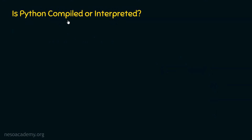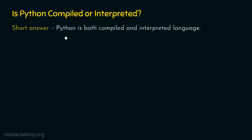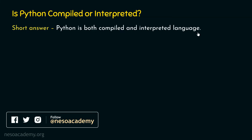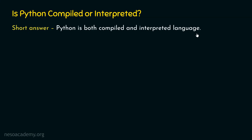The short answer to this question is: Python is both compiled and interpreted language. This means that Python is a hybrid language. In the last presentation, we learned what a hybrid language is — a language which uses both compiler and interpreter for its translation. Similarly, Python also needs both compiler and interpreter for its translation.